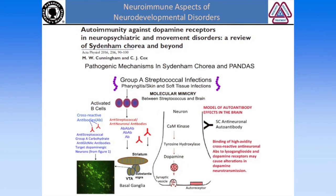A nice figure from Dr. Cunningham's paper summarizes these processes: antibodies that cross-react with infectious agents target the basal ganglia. In the neuron, they activate CaM kinase 2, which activates tyrosine hydroxylase to produce and increase dopamine within the brain, causing OCD behavior and tics.